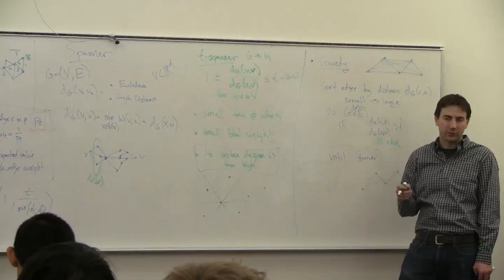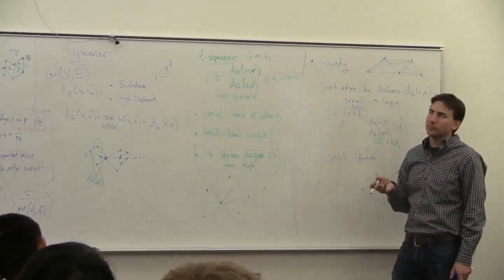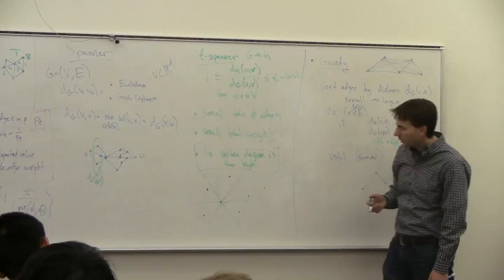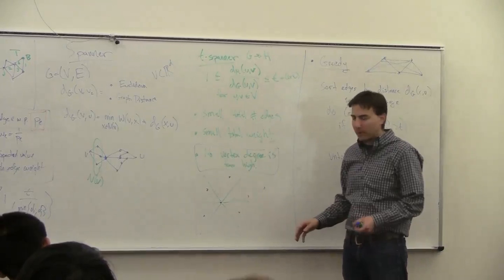So you can generalize that in higher dimensions, you need, I think, like 12 cones in three dimensions. And then it grows even higher. And so then, for each of these directions, I'm going to find, for this vertex, I'm going to add the closest point.